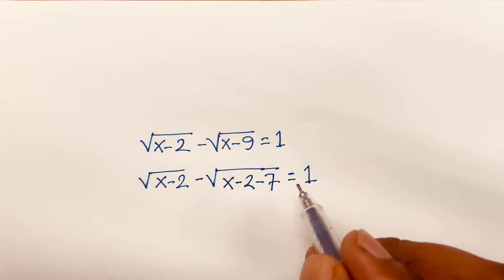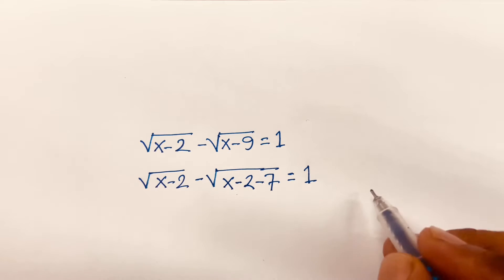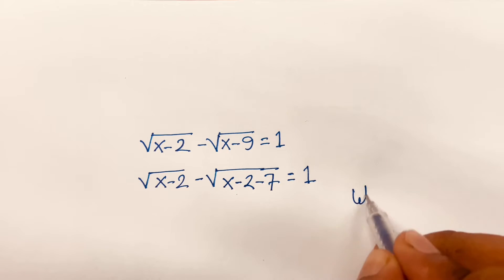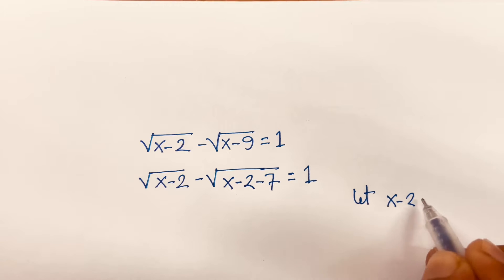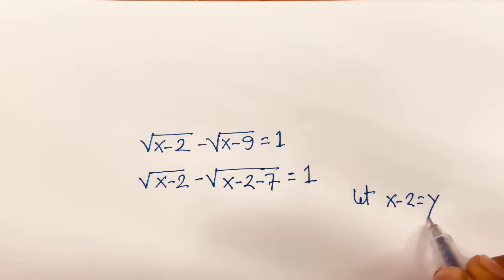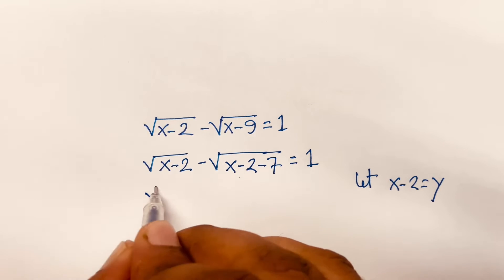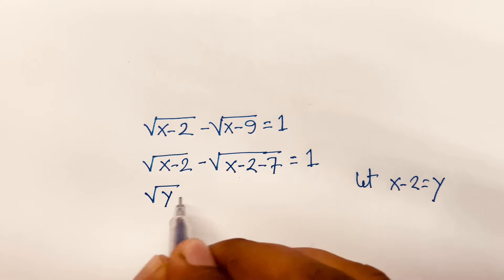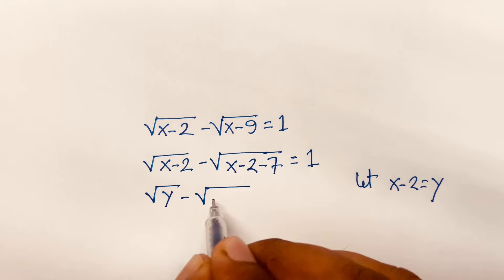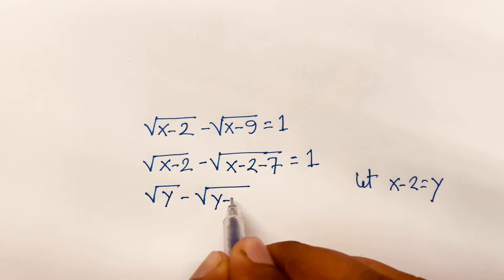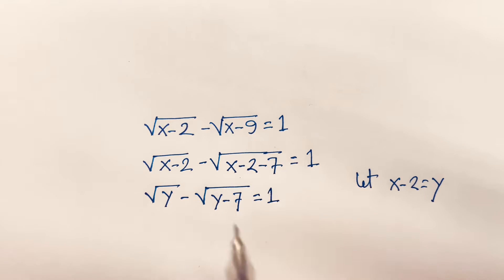Here we have x minus 2. Let x minus 2 equal y. This time I can say the equation becomes square root y minus square root of (y minus 7) equals 1.